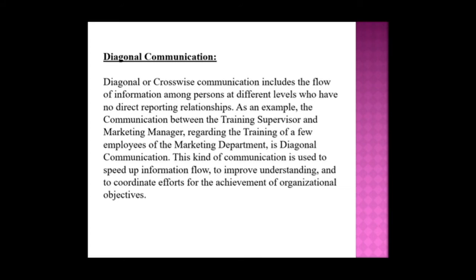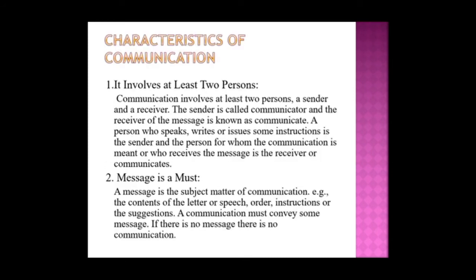Diagonal or crosswise communication includes the flow of information among persons at different levels who have no direct reporting relationships. An example is communication between a training supervisor and a marketing manager regarding the training of employees in the marketing department. This kind of communication is used to speed up information flow, improve understanding, and coordinate efforts for achieving organizational objectives.